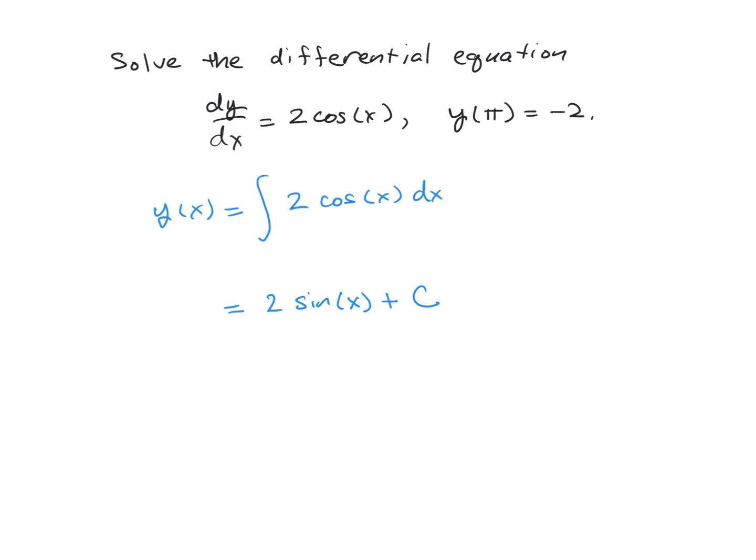Now, in our problem, we actually want to find the value of c that will give us a negative 2 when we evaluate our function at pi. So to do so, we go through and evaluate at pi.